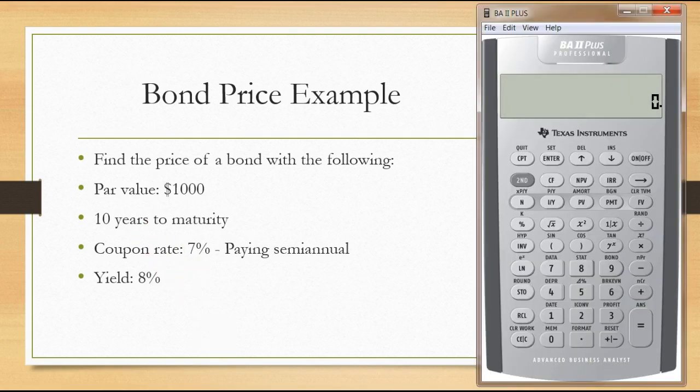If we pull up the BA2 Plus calculator, we're going to use the time value of money functions, these five keys across row number three of the calculator. I'm going to show you that method first and then I'm also going to show you a second method using the bond function just above the 9 key.